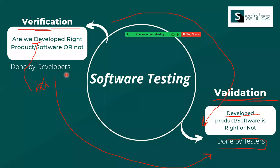In the validation process, the testers validate that the developed product or software is right or not, from all different perceptions. So software testing is the combination of verification done by the developers and validation done by the testers. In an interview, they will ask you: what is verification and what is validation?